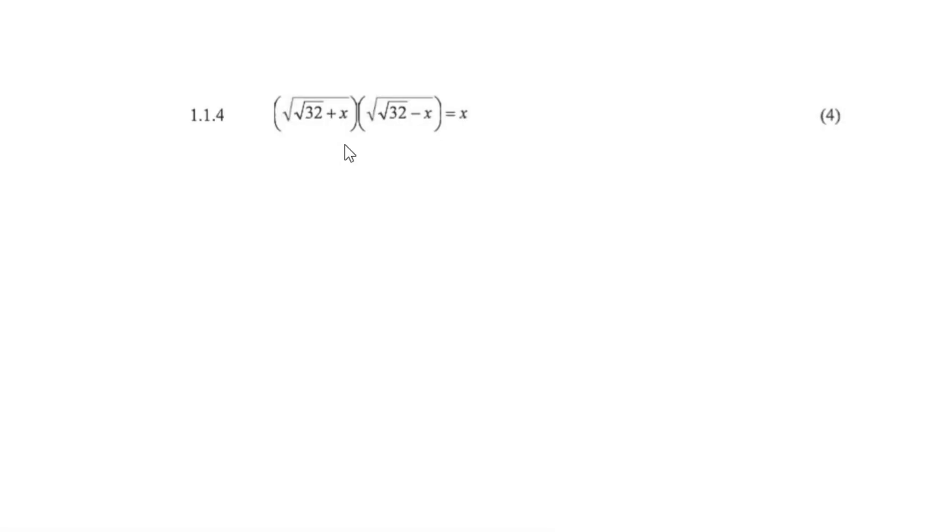The first thing I would do is multiply these two brackets together. Now what you should know is that when you multiply two square roots together, for example, square root 3 multiplied by square root 2 gives you square root 6.